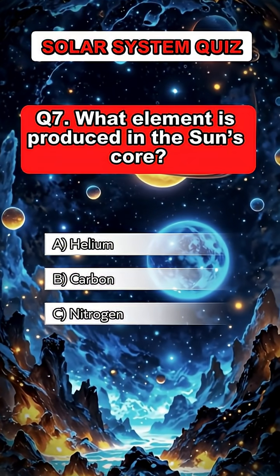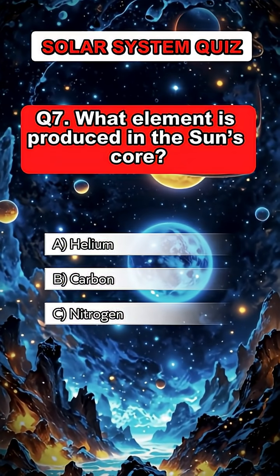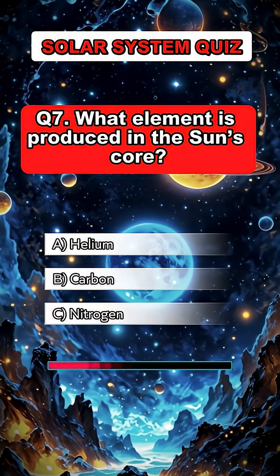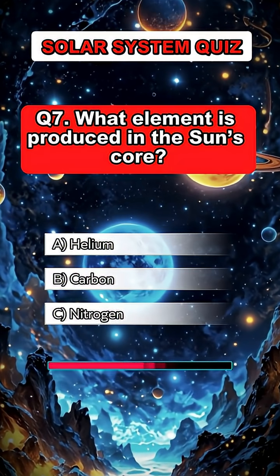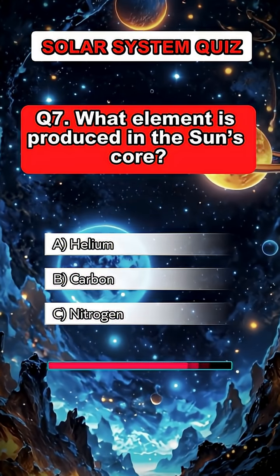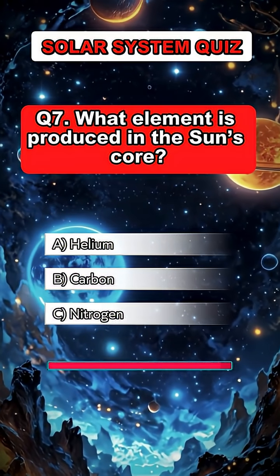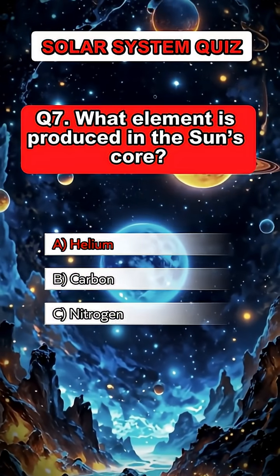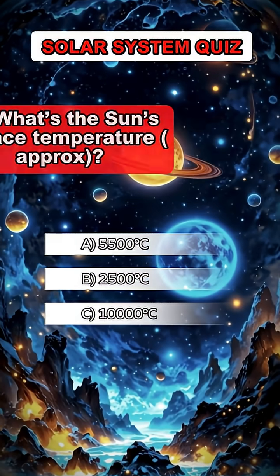Question 7. What element is produced in the Sun's core? Answer A. Helium.